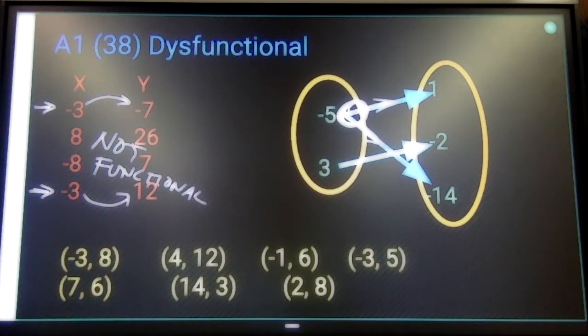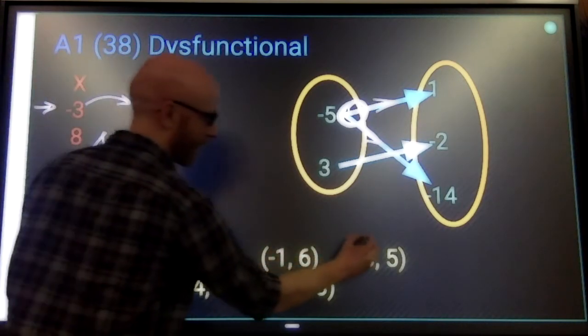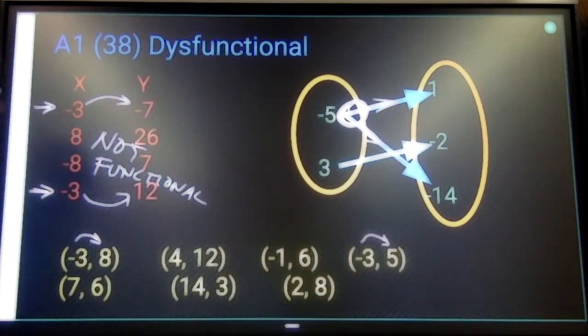In a set of ordered pairs, already looked a little bit at this, you'll be looking for the same kind of thing. I don't know why I keep choosing negative 3 as my dysfunctional point, but same x maps to two different y's, it's not a function.